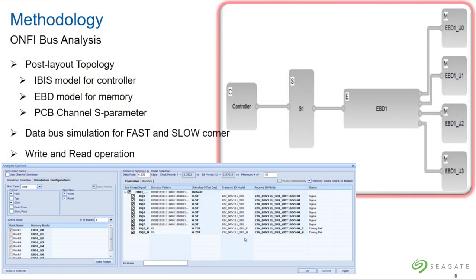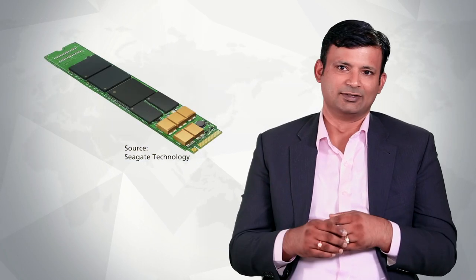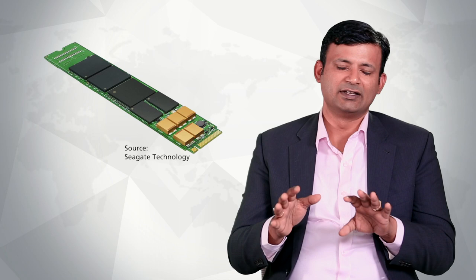The post layout simulation on the System SI tool generates reports after the simulation is done, and that System SI report has a wealth of information. The System SI tool gives out what are the timing margins available for this bus, and apart from this it also lists out the best and the worst case scenarios based on these timing margins.